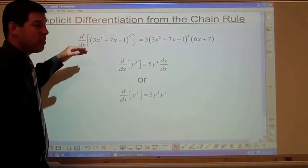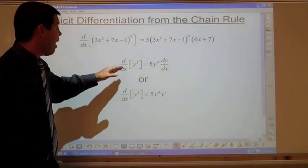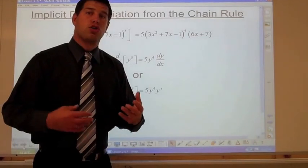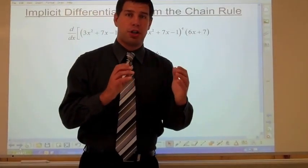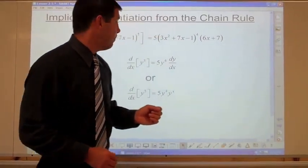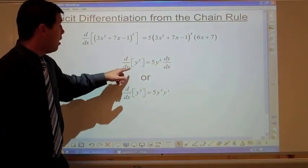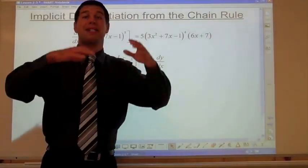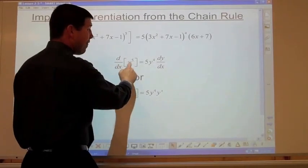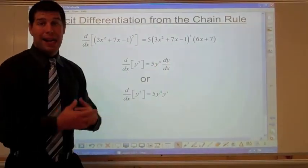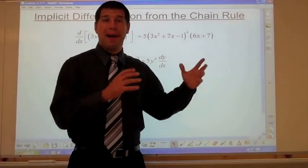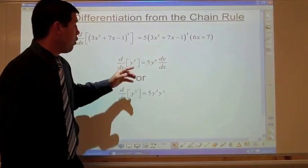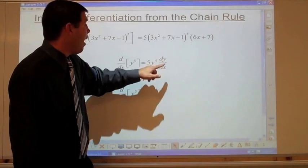If you're deriving with respect to x and you have to derive a term with a different variable in it, you treat that just like another function — a separate function — that you multiply by its derivative at the end. So if I had the derivative with respect to x of y to the fifth power, I would derive the outside function first: 5y to the fourth. Then at the end, multiply by the derivative of what's inside — just a y — so you multiply by dy/dx.